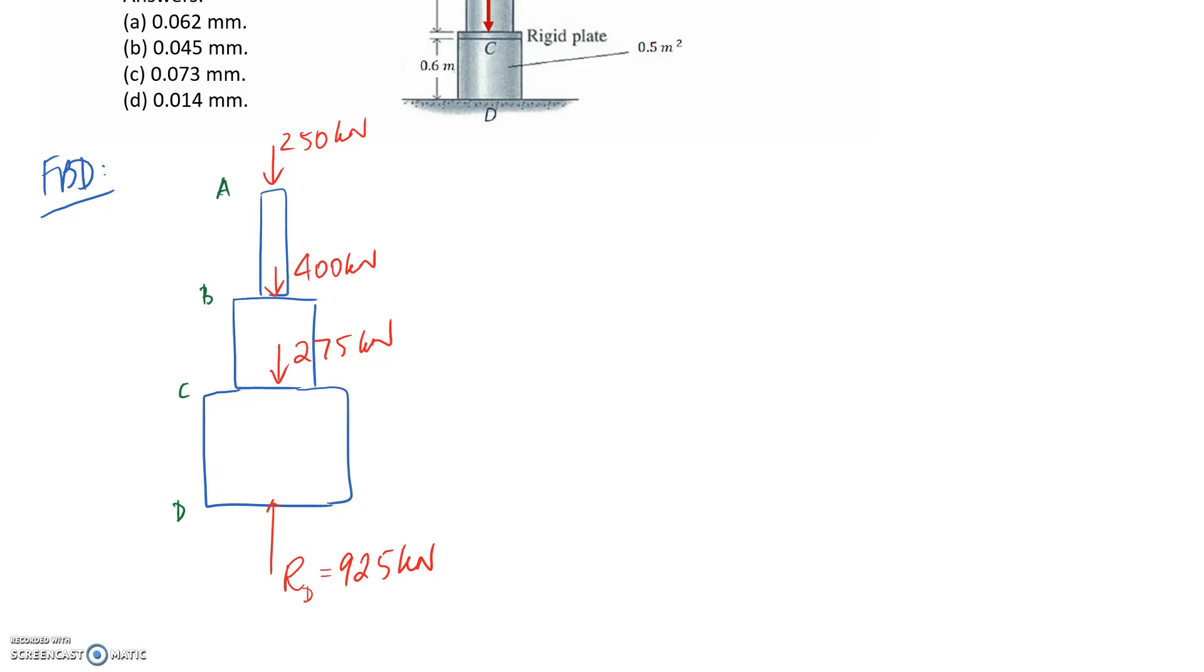For section AB, we take a cut through it and redraw the free body diagram of the top side since that's easier. The 250 gets transferred across, and at the cut point we need to replace it with the internal load, which is only an axial load. That's PAB. Sum of forces have to equal zero, so it's going to be 250 kilonewtons.